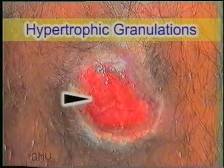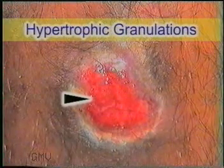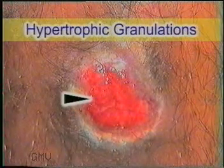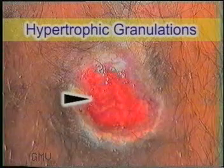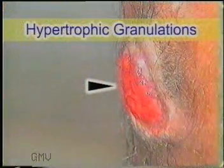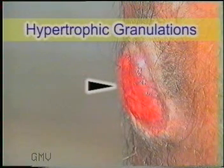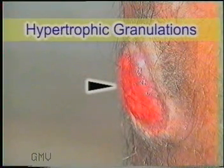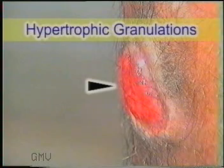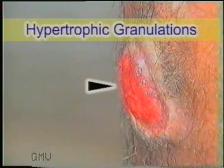A larger-sized ulcer where epithelialization is not completed in time shows hypertrophic granulation tissue. Note these exuberant granulations rising above the surface of the skin — this is also termed as proud flesh and is accompanied by excessive serosanguinous or purulent discharge.